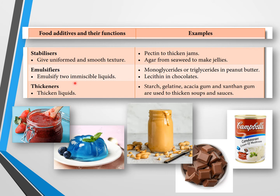The fifth type is emulsifiers. Emulsifiers are used to mix two immiscible liquids — for example, cream and ice in ice cream. Examples include monoglycerides and triglycerides in peanut butter, and lecithin in chocolates.